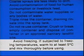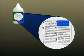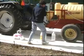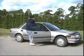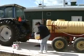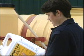Avoid freezing; if subjected to freezing temperatures, warm to at least five degrees centigrade and mix thoroughly before using. The first aid section tells you what to do if someone is poisoned or injured by the pesticide. If an emergency arises, you will need to act quickly and calmly. The label is the fastest source of information to find out what to do in case of an emergency. You should be familiar with the first aid information on the label, but it is important to check the label again before administering first aid. Knowing what to do ahead of time could save the life of a loved one.